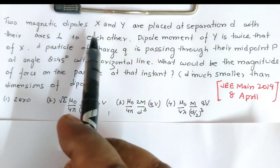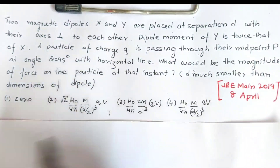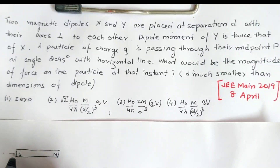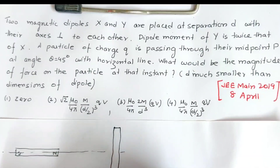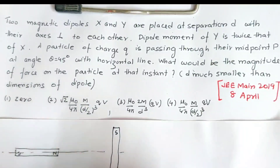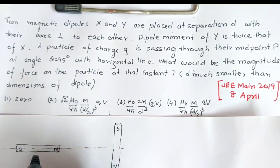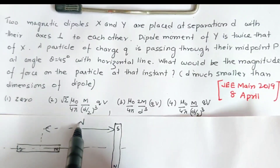we have two magnetic dipoles X and Y placed at separation D with their axes perpendicular to each other. This is one dipole with its south pole and north pole marking its axis, and this is another dipole. Their axes are perpendicular and they are placed at separation D from each other — midpoint of this dipole to the other dipole is distance D.